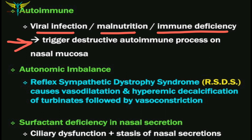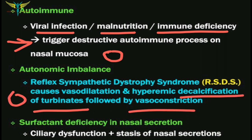Autoimmune pathology comes from viral infection, malnutrition, or immune deficiency. These factors trigger a destructive autoimmune process in the nasal mucosa that may cause large roomy cavities, which further leads to crusting. The autonomic imbalance, or reflex sympathetic dystrophy syndrome, causes vasodilation and hyperemic decalcification of the turbinates, followed by vasoconstriction. Surfactant deficiency in the nasal secretion leads to ciliary dysfunction and stasis of nasal secretions.